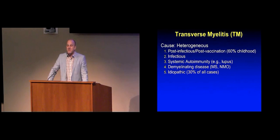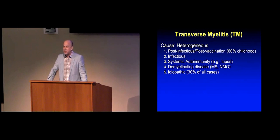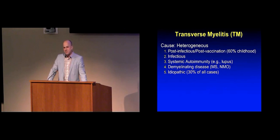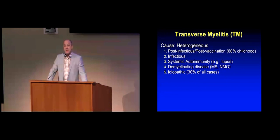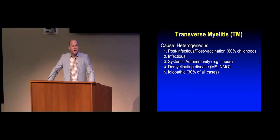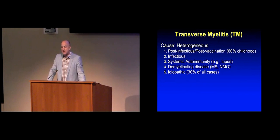There is what we thought was a variant of multiple sclerosis, now appreciated as something totally distinct — neuromyelitis optica — that predominantly affects the spinal cord and the optic nerves. And unfortunately, a significant fraction of transverse myelitis is idiopathic, our fancy word for unknown.